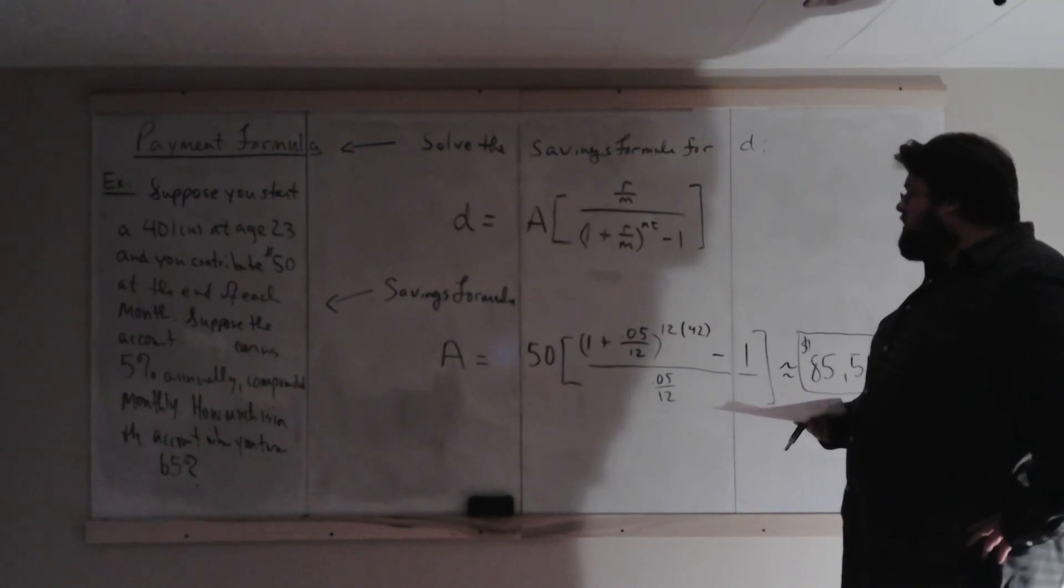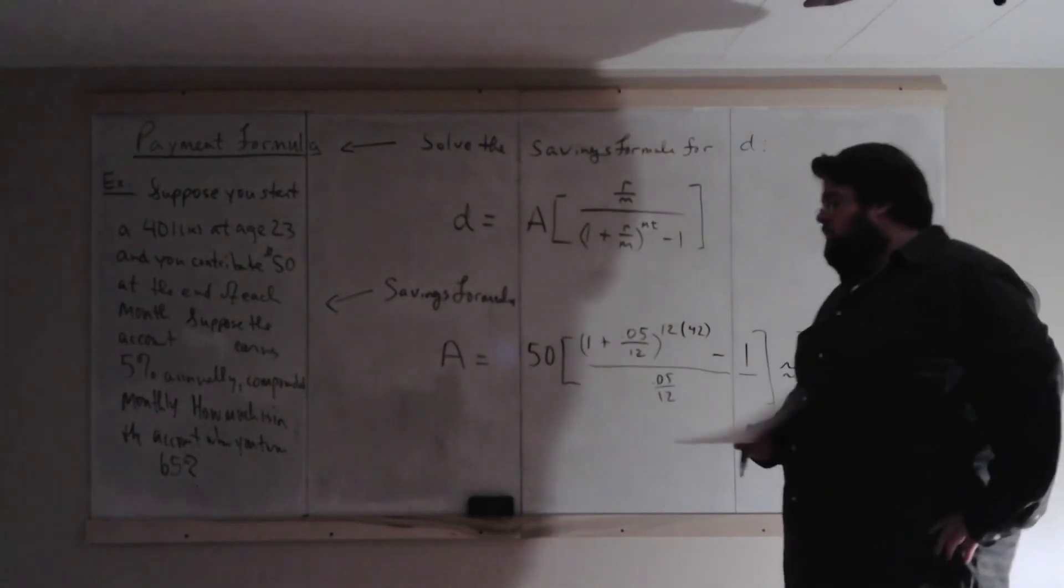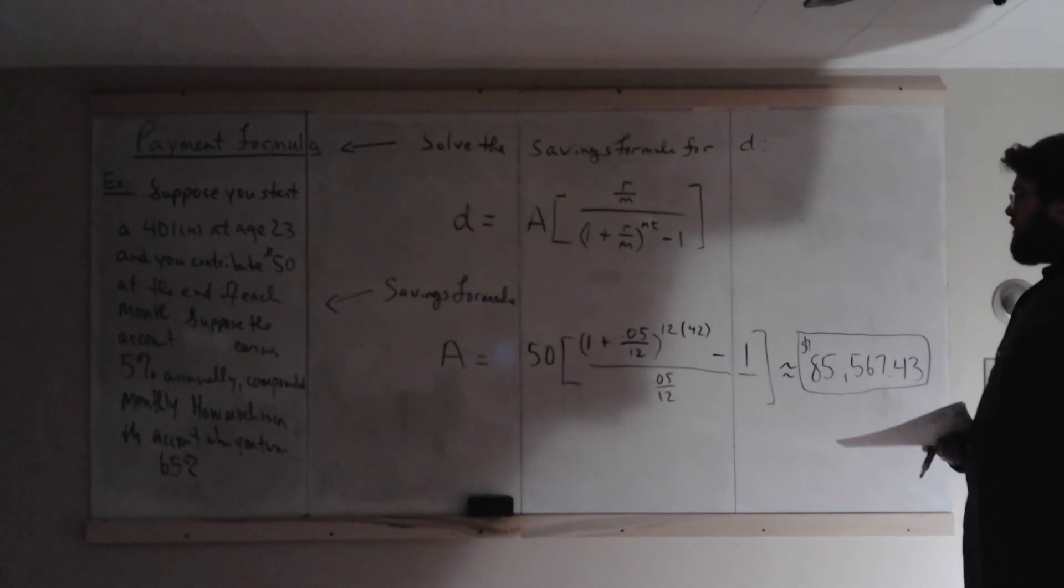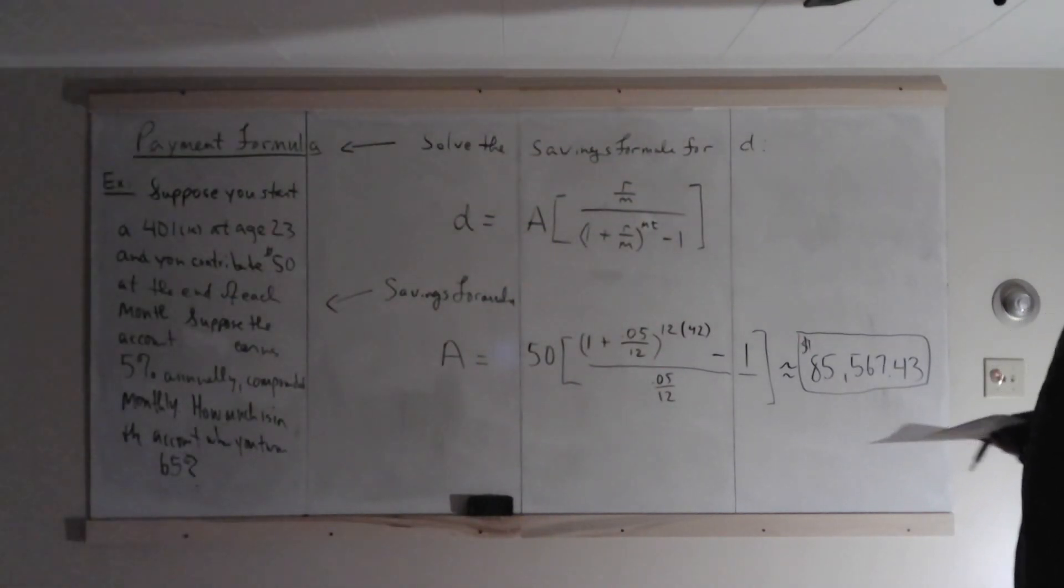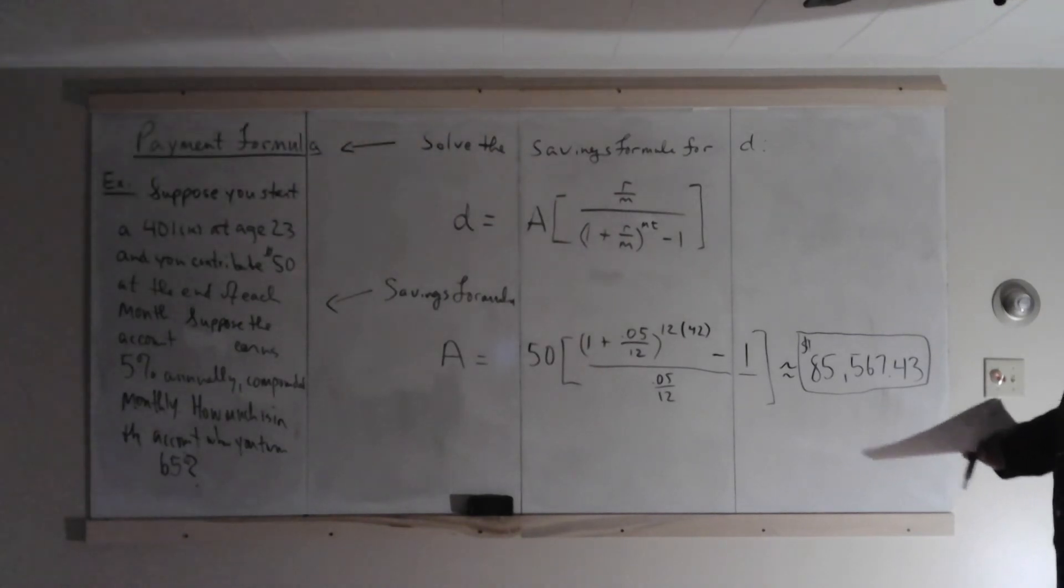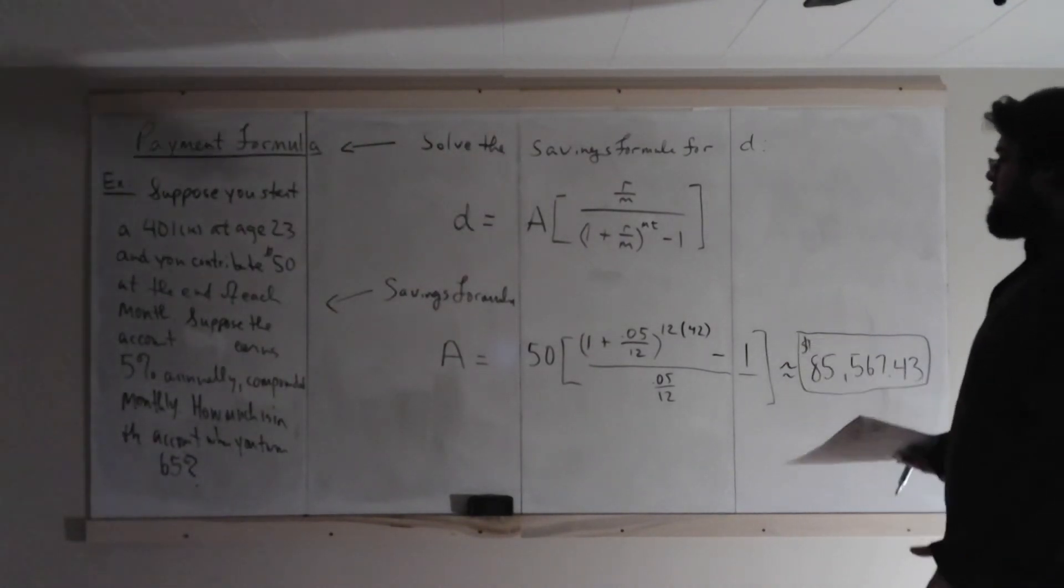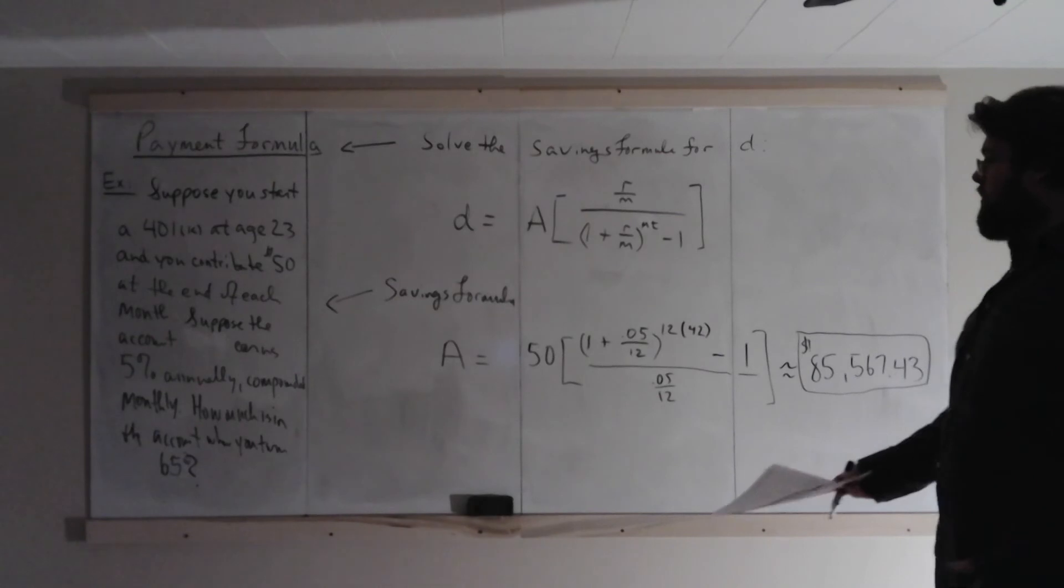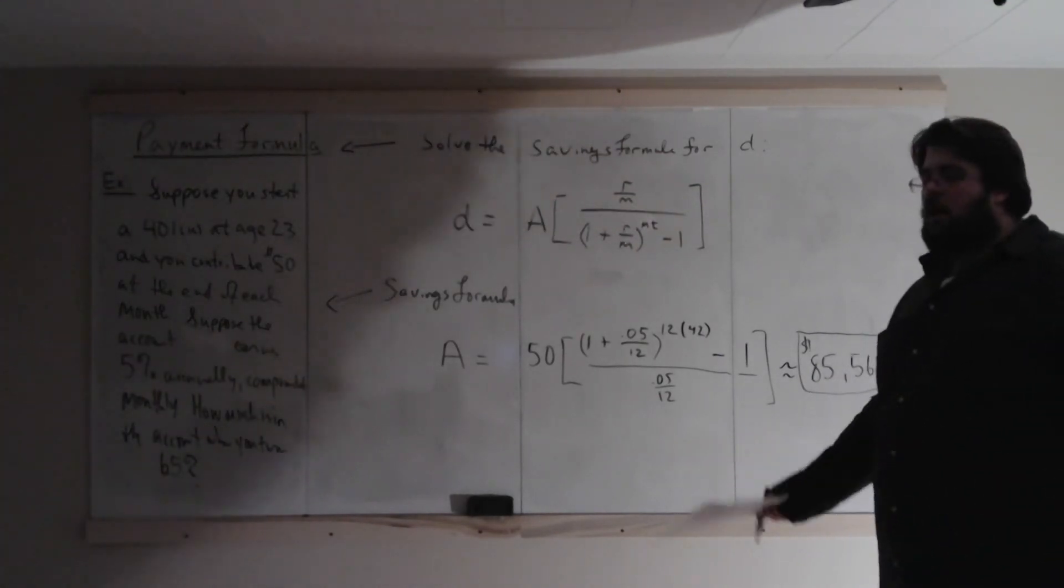So what's that? $600 a year times 42, so that's $24,000 about. A little more than $24,000. $25,200, is that the right number? But all the interest allows this to grow pretty large. So that's not too bad. You're $50 a month, you're taking what feels like $24,000 and it's turning into $85,000. Not bad.